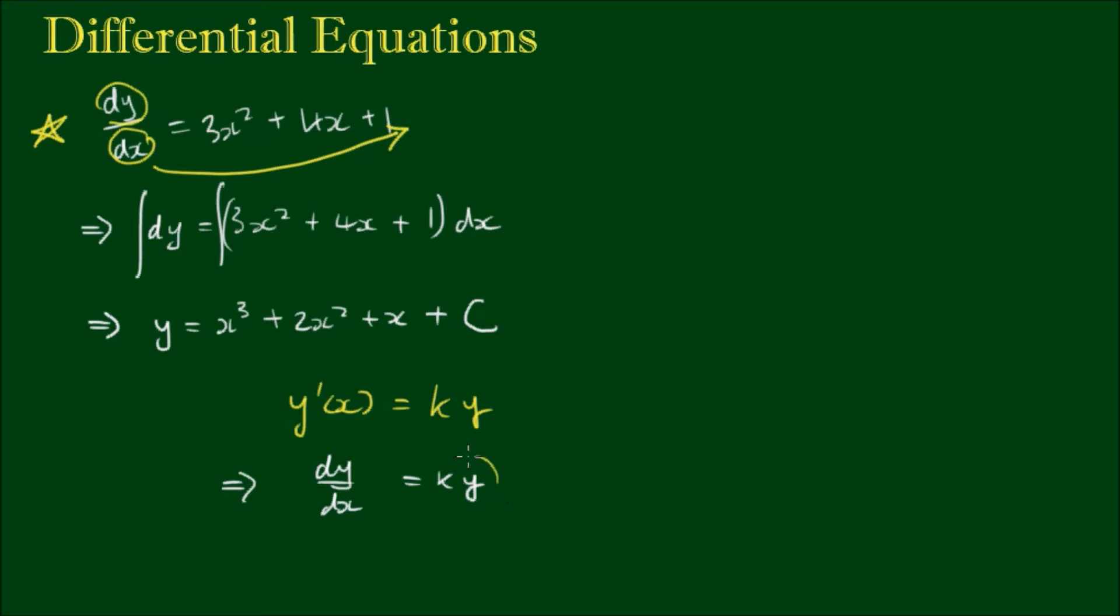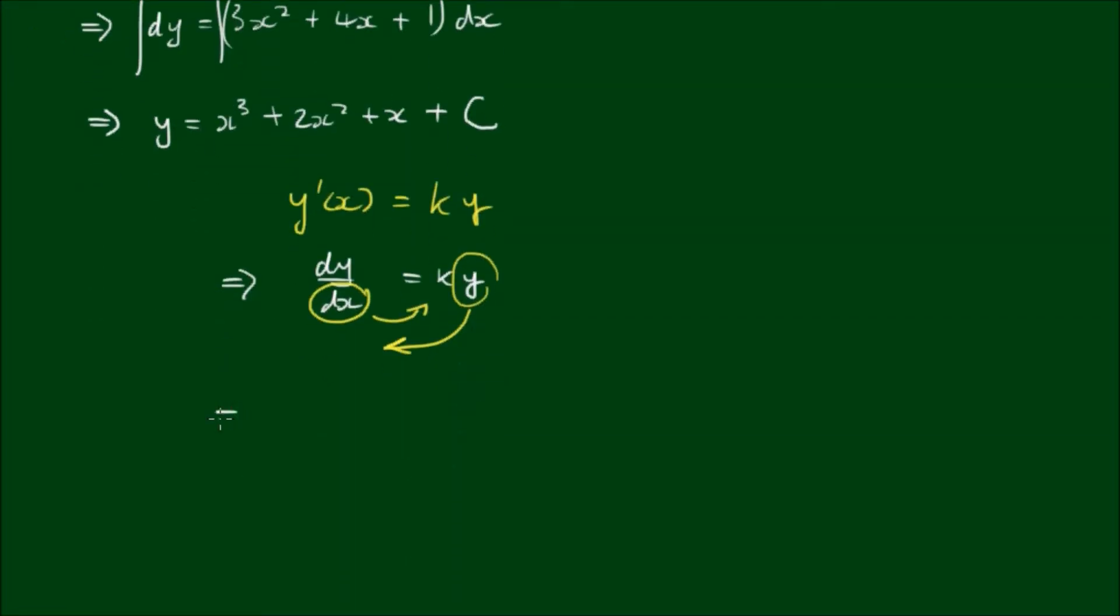To solve this the process is to get all of the y's on one side, so we can move this y downstairs to the left hand side and move all the x's, so we can move this dx upstairs to the right hand side. The differential equation becomes dy/y equals k dx.